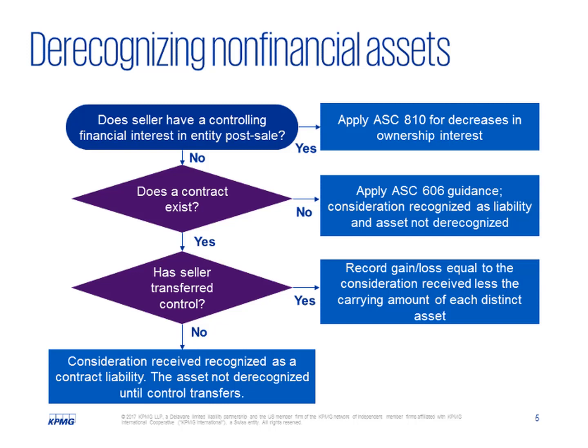If the entity did not retain a controlling interest, it evaluates whether a contract exists and whether it has transferred control of the underlying assets to their owner, i.e., the subsidiary, using the New Revenue Recognition Guidance in Topic 606. An entity also would use the guidance in the New Revenue Recognition Standard to identify each distinct non-financial and in-substance non-financial asset within the subsidiary. The individual assets are the unit of account for derecognition, so the entity measures its gain or loss on the derecognition of each distinct non-financial asset as the difference between the amount of consideration received and the carrying amount of the distinct non-financial or in-substance non-financial asset. The consideration received includes the transaction price as determined using the New Revenue Recognition Guidance and the carrying amount of liabilities assumed by the other party. If there is more than one distinct non-financial asset, the entity allocates the total consideration received under the contract to each distinct non-financial asset using the allocation guidance in the New Revenue Recognition Standard.